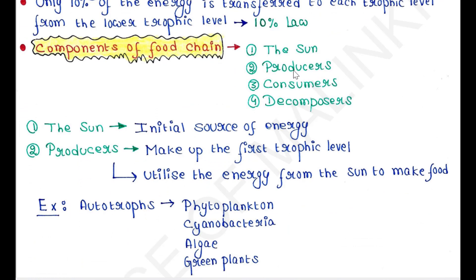So what are the components of the food chain? The Sun, producers, consumers, and decomposers. The Sun is the initial source of energy. Producers make up the first trophic level — they utilize the energy from the Sun to make food. Examples of producers are autotrophs.